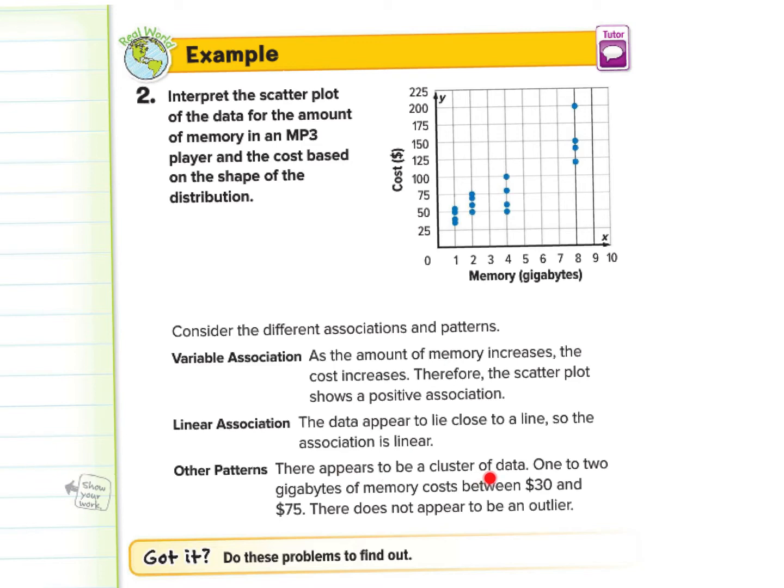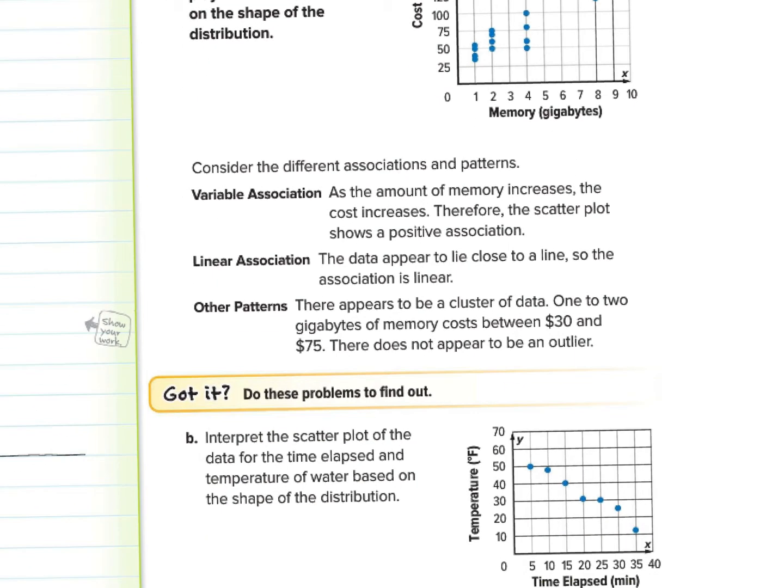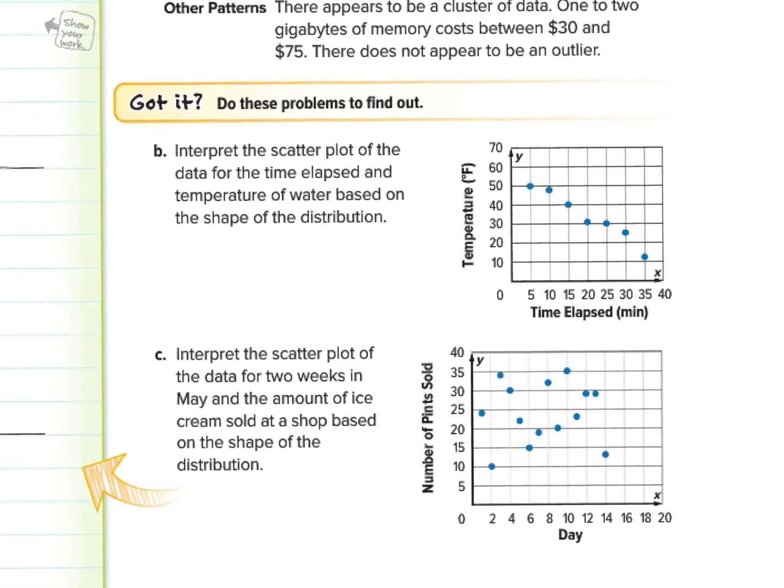Linear association. The data appear to lie close to a line. So the association is linear. If you follow my pointer, you could get a line right there. And then other patterns. There appears to be a cluster of data. Yeah. There is definitely. There appears to be a cluster of data right around here. One to two gigabytes of memory cost between $30 and $75. There does not appear to be an outlier. So no outliers. Nothing that is completely against the trend or out of the blue. And yes, we do have a common standard sort of. Between one to two gigs, between $30 to $75. This is interesting information, guys. Interesting ways to analyze data and information.